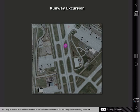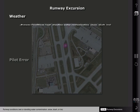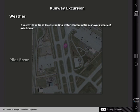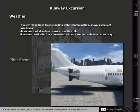A runway excursion is an incident when an aircraft unintentionally veers off the runway during a landing roll or taxi. Weather and pilot error are two common factors contributing to runway excursions. Weather-related factors include runway conditions such as wet or standing water contamination, snow, slush, or ice; wind shear or a large crosswind component; inaccurate information on wind or runway conditions; and selection of reverse thrust combined with a crosswind or wet runway. On aircraft with aft-mounted engines, controllability issues may be further aggravated by adding reverse thrust, as selecting reverse thrust reduces the airflow over the aircraft's vertical stabilizer, reducing its effectiveness.